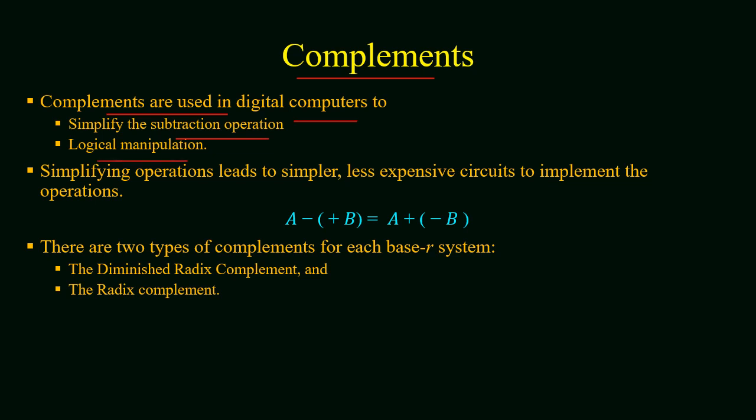The simplification process gives us less expensive and simpler circuits for operations. In case of subtraction, we have two positive numbers A and B and wish to perform subtraction A minus B. Instead of subtracting a negative number, we will add a negative number, replacing the operation of subtraction with addition.